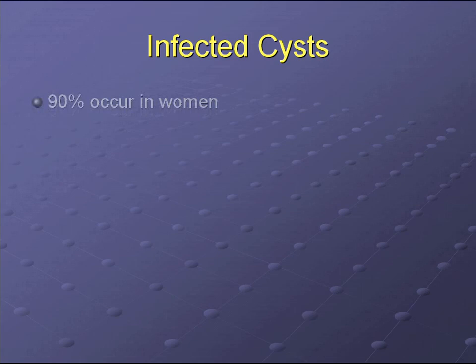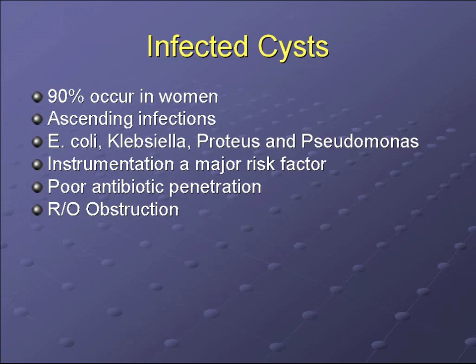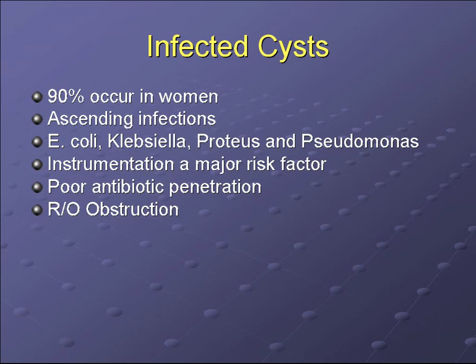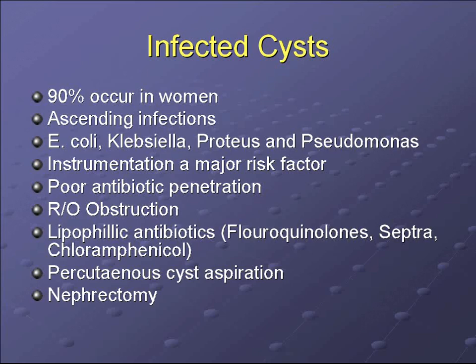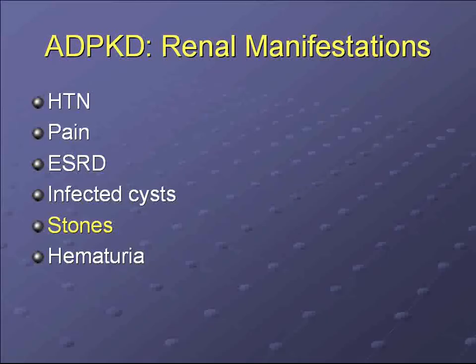Most cyst infections occur in women in 90% of cases. They are mostly ascending infections with E. coli, Klebsiella, Proteus, and Pseudomonas. Urological instrumentation is a major risk factor. These infections are difficult to treat because of poor antibiotic penetration into cysts — since most cysts are separate from the nephron, antibiotics must penetrate the cyst wall. Lipophilic antibiotics are the drugs of choice, commonly fluoroquinolones, TMP-SMX, and chloramphenicol. In refractory cases, percutaneous cyst aspiration is required, and if that fails, nephrectomy is needed.